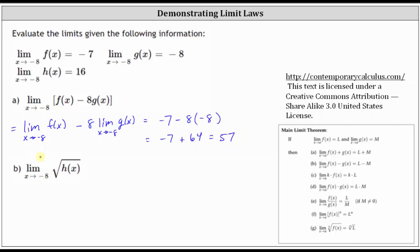For part b, we have the limit of the square root of h of x as x approaches negative eight. The limit of the square root of h of x is equal to the square root of the limit of h of x as x approaches negative eight. The limit of h of x as x approaches negative eight is given as 16, giving us the square root of 16, which is equal to four.